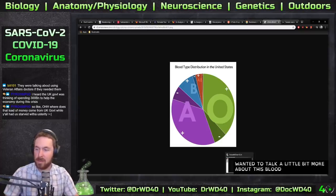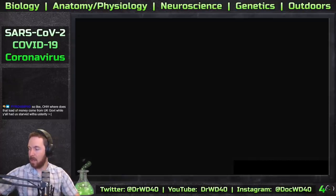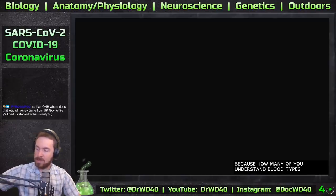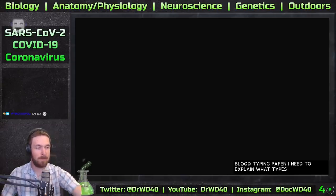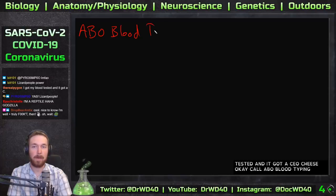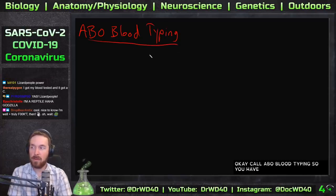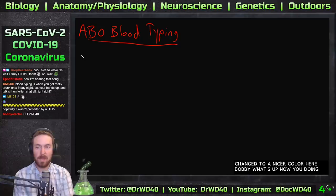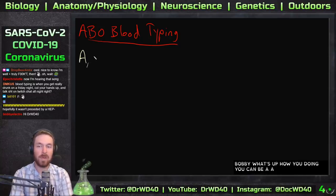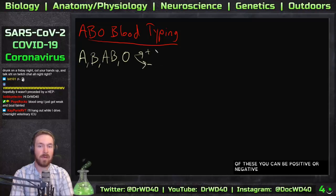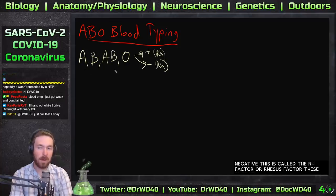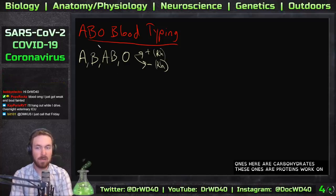I wanted to talk more about blood typing, so let me draw it out. It's called ABO blood typing — you have three blood groups: A, B, AB, or O. With each of these you can be positive or negative, which is called the Rh factor or rhesus factor. The Rh factor involves proteins, while the ABO groups are carbohydrates. We'll focus on the major blood groups.